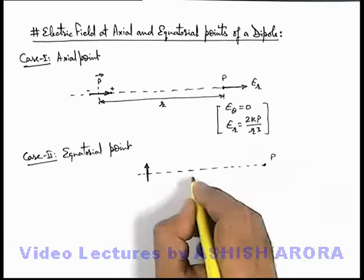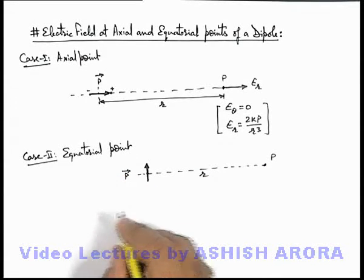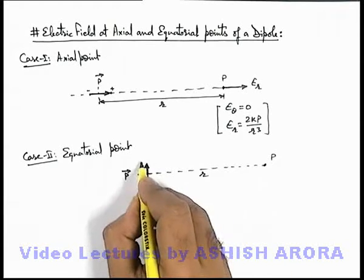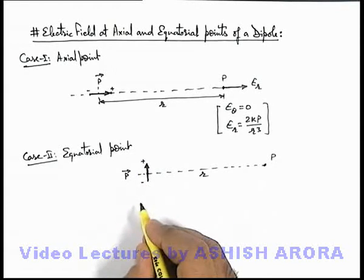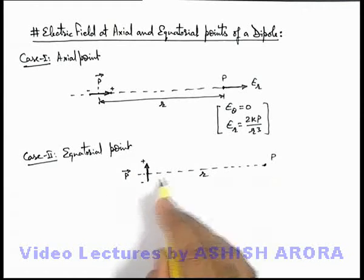Here at point P located at a distance r from the dipole with dipole moment p, we wish to find the electric field. Here we can see for this positive and negative charge, the electric field due to positive is away and negative is towards.